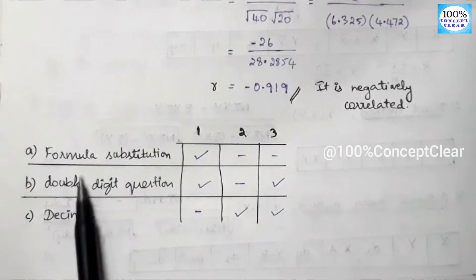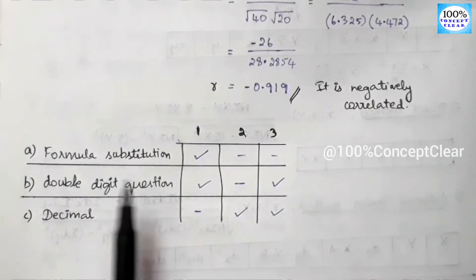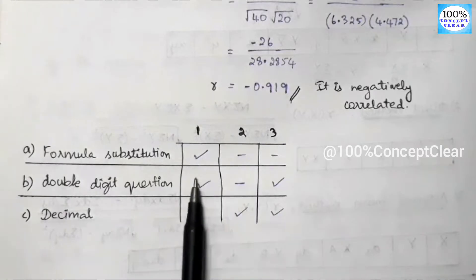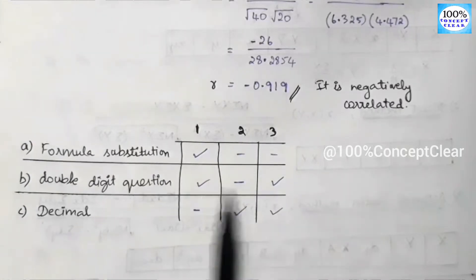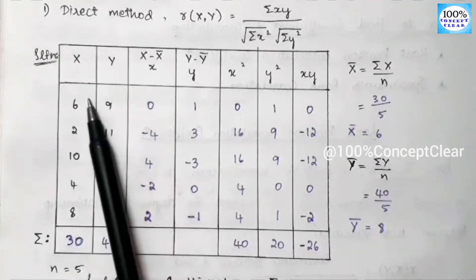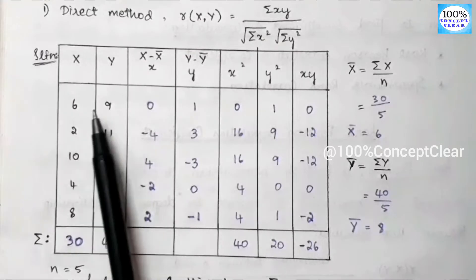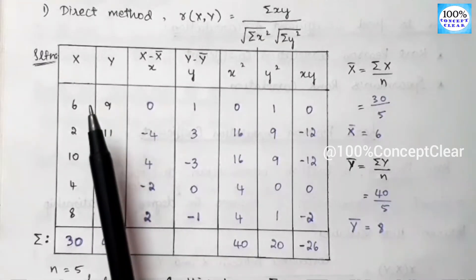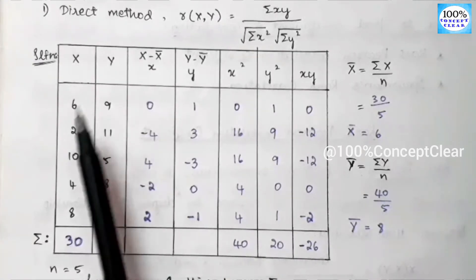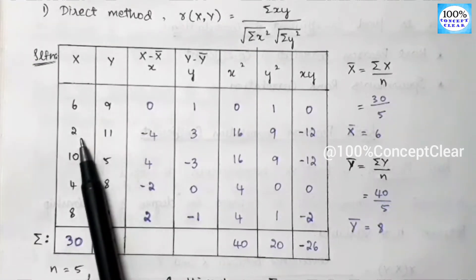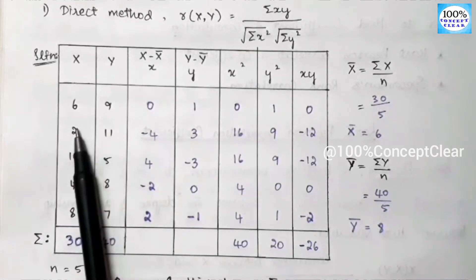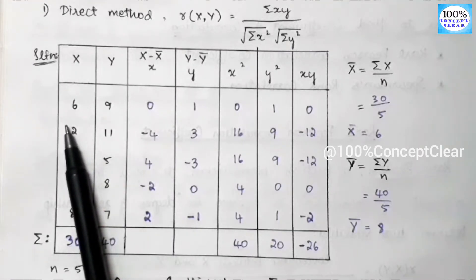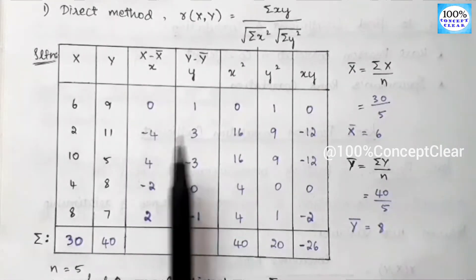We have a double-digit question. If we have a double-digit question, double-digit is called x and y value — x value and y value come in double digits. For example, 6 and 2 are small numbers — single-digit. But 65, 85, 90 are double-digit, called big values. So we have the first method and third method.